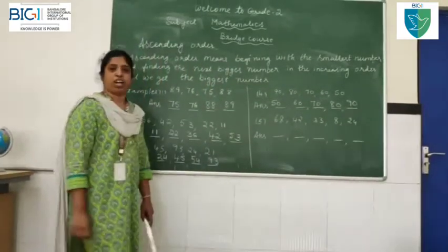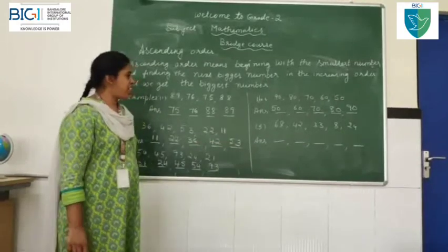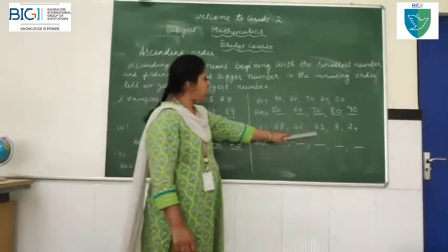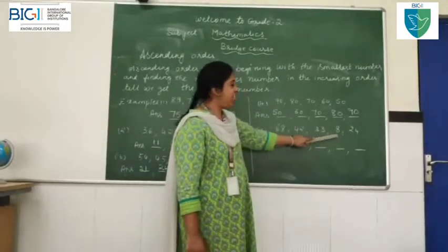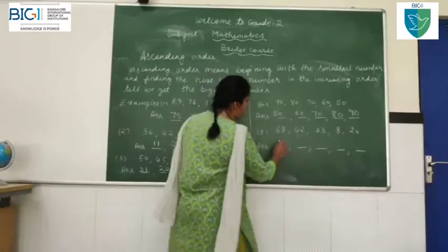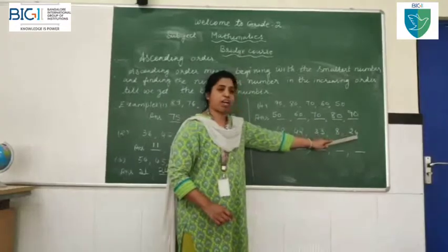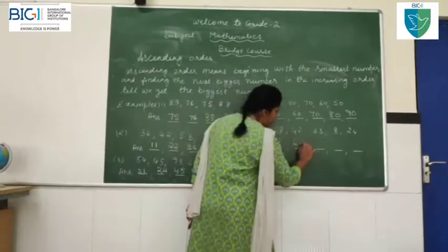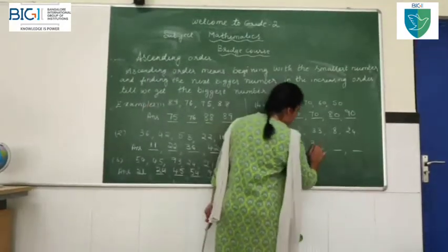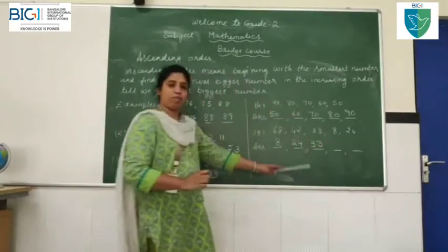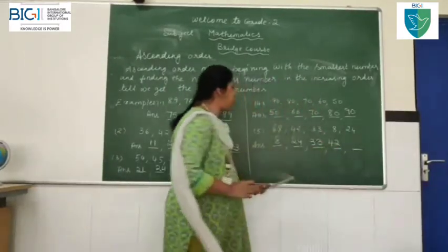Do you understand? Now, next, we will go to the fifth example. Which is the smallest number? Can you see all the numbers? 8 is the smallest number. After 8, the next number is 24. Next, pick a number after 24: 33. After 33, the next number is 42. And next is 68.